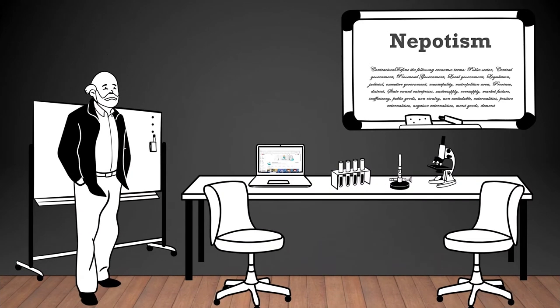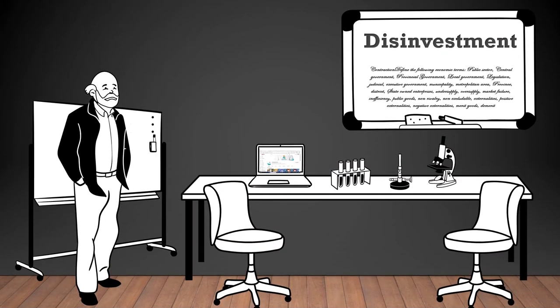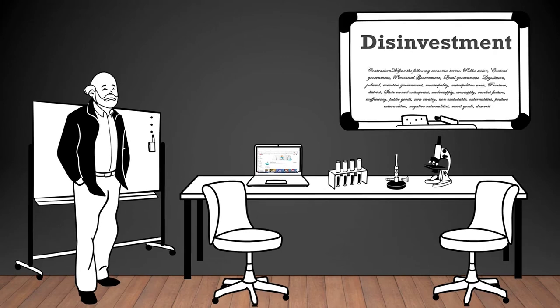Nepotism: the practice of favoring relatives or friends, especially in giving jobs or opportunities, regardless of their qualifications or abilities. Disinvestment: the process of selling or divesting government-owned assets or investments.